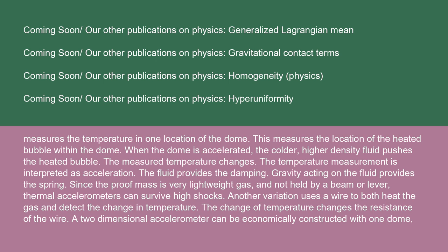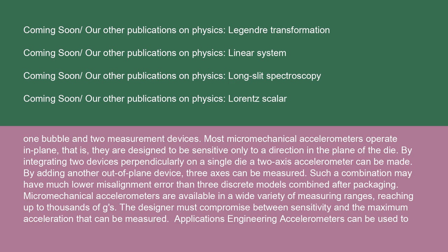Since the proof mass is very lightweight gas and not held by a beam or lever, thermal accelerometers can survive high shocks. Another variation uses a wire to both heat the gas and detect the change in temperature; the change of temperature changes the resistance of the wire. A two-dimensional accelerometer can be economically constructed with one dome, one bubble, and two measurement devices. Most micromechanical accelerometers operate in-plane, designed to be sensitive only to a direction in the plane of the die. By integrating two devices perpendicularly on a single die, a two-axis accelerometer can be made; by adding another out-of-plane device, three axes can be measured, with much lower misalignment error than three discrete models combined after packaging.